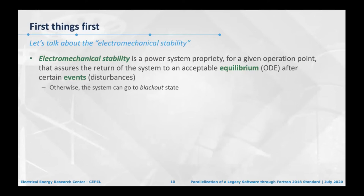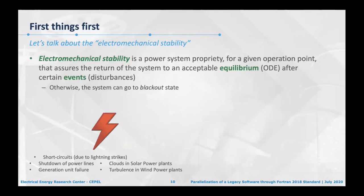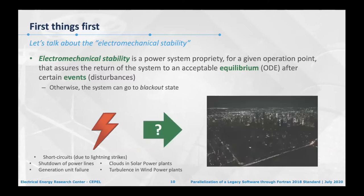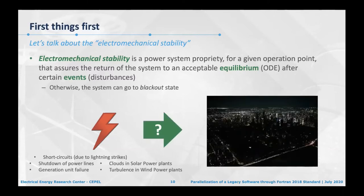The last part of the software's purpose is electromechanical stability — a power system property that assures the return of the system to acceptable equilibrium after certain events or disturbances. Otherwise the system can go to a blackout state. Events like short circuits due to lightning strikes, shutdown of power lines, generation failures, passing clouds in solar power plants, or turbulence in wind power plants can lead to blackouts or unsafe operating conditions.